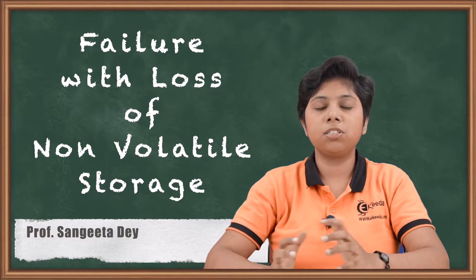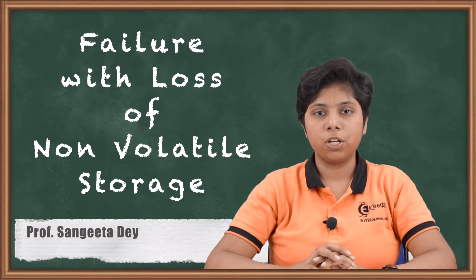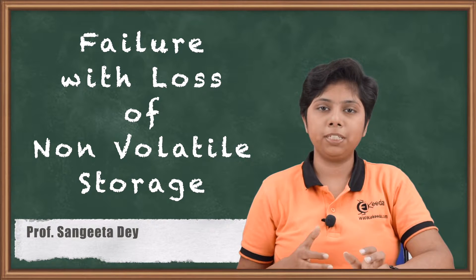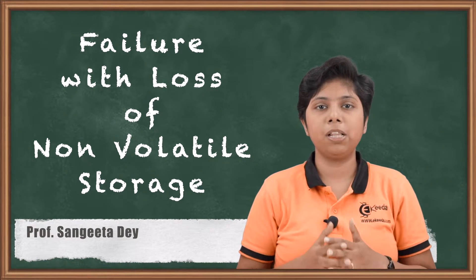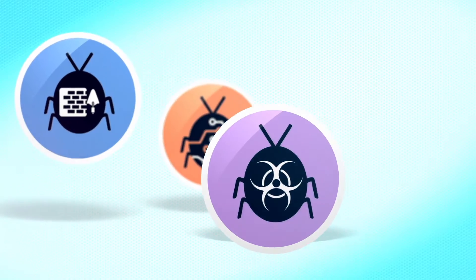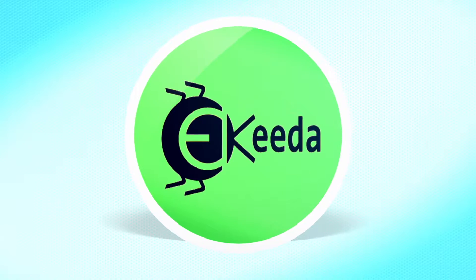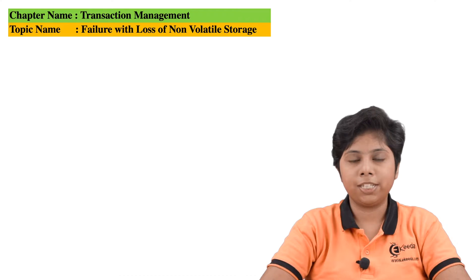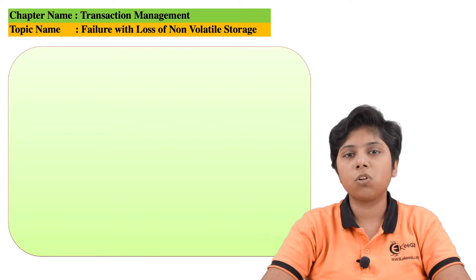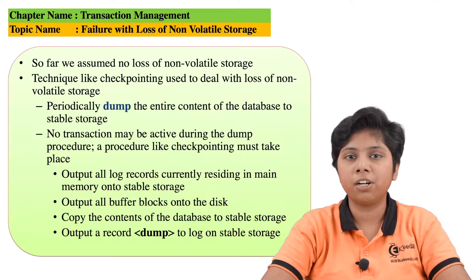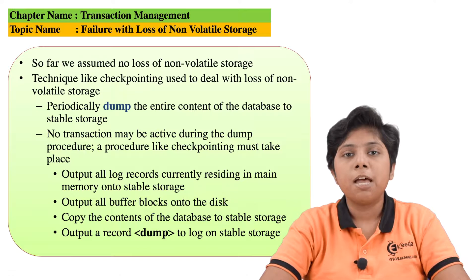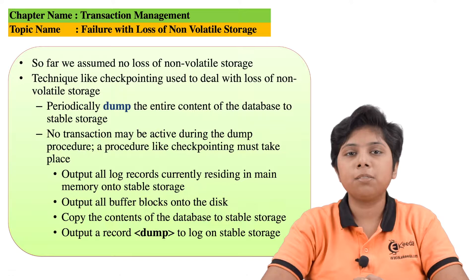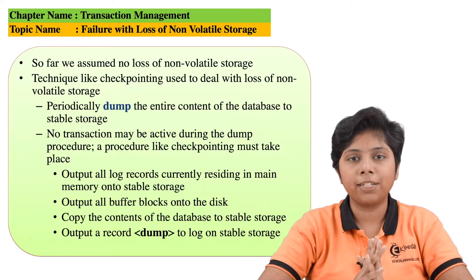Today we will talk about the failure associated with losing non-volatile storage. We will see different parts and the ways we can achieve failure recovery. Till now we have discussed failure with only volatile storage — where data in memory is interrupted by a transaction halt due to a logical error, system error, or system crash. But what happens if the stable storage that is storing the data is entirely halted or there is any fault in this non-volatile storage?